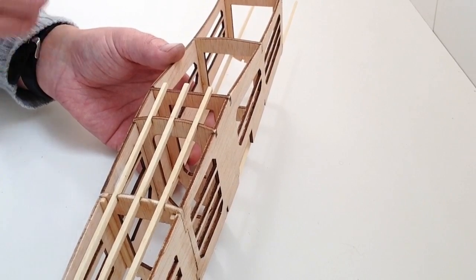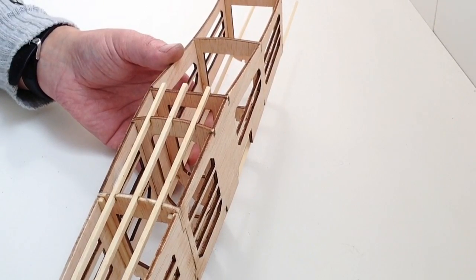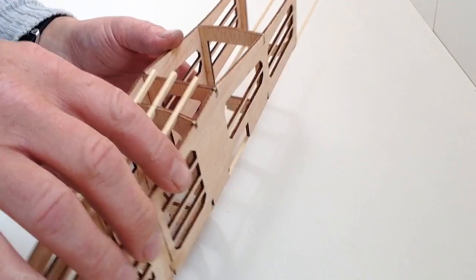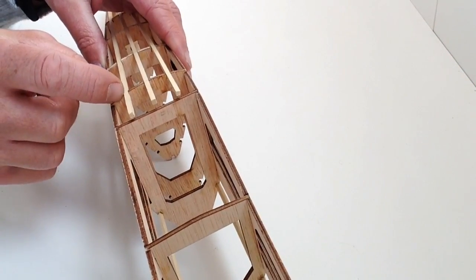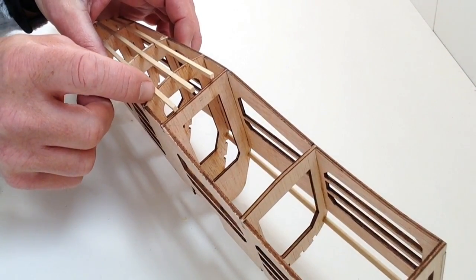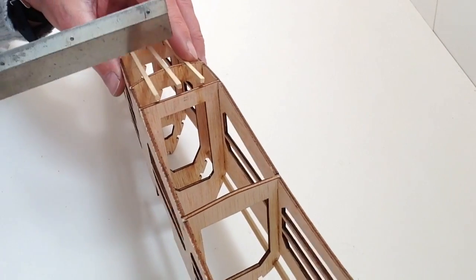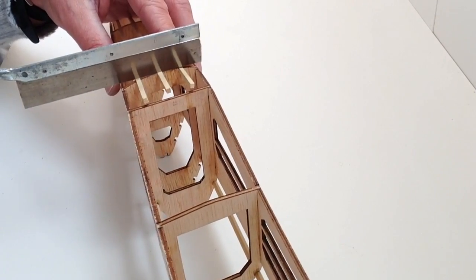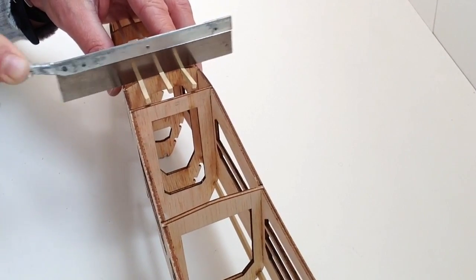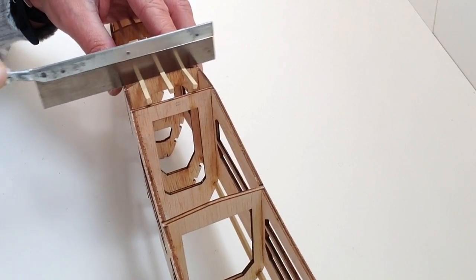Once that's thoroughly dried, we need to cut these sections off here. You'll notice we need to cut them just to that section there. Take a small saw and gently cut away along that line until all three of those are removed.